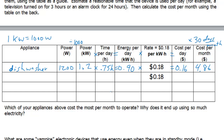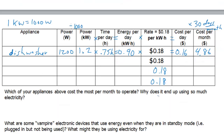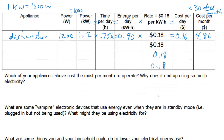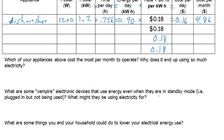Now that you've seen this example, pick at least three other appliances from the table I gave you the link for, and calculate how much it costs to use per day and how much it costs to use per month. You can use the same value of 18 cents per kilowatt-hour for each of them. But as you'll see from my electric bill, sometimes you end up paying much more than 18 cents per kilowatt-hour.